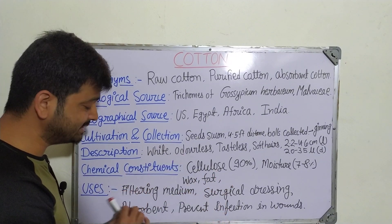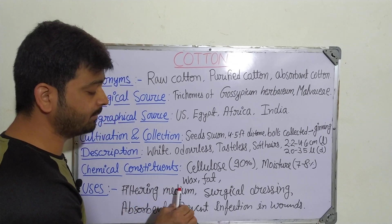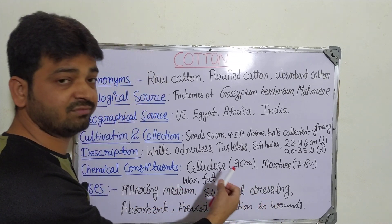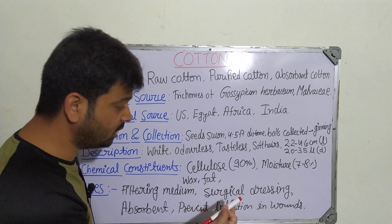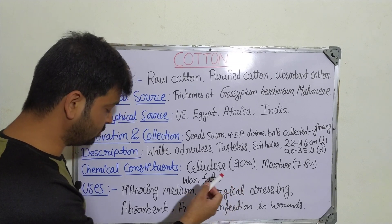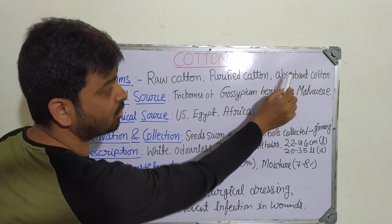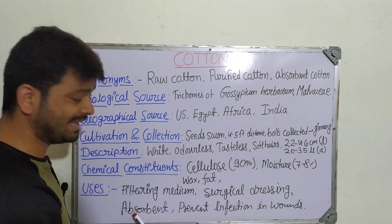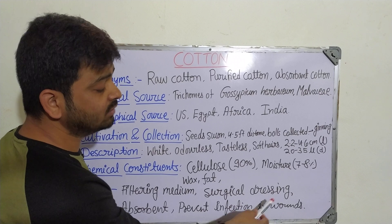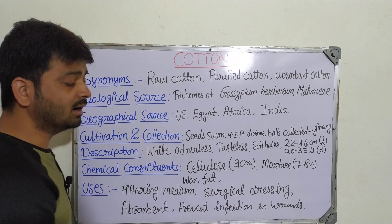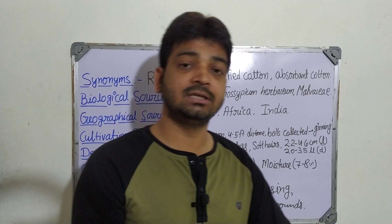Coming to the uses: it has medicinal and pharmaceutical use. It is used as a filtering medium, and of course for surgical dressings — cotton is famous for this and we cannot imagine the surgical world without it. It is also known as absorbent cotton because it is used as an absorbent.